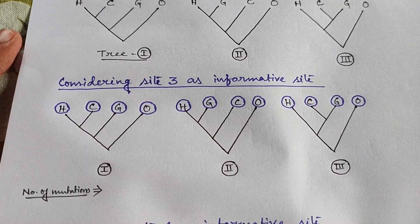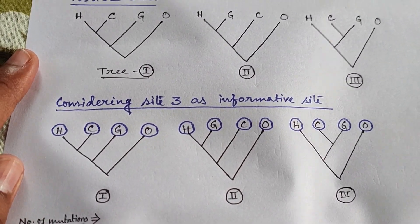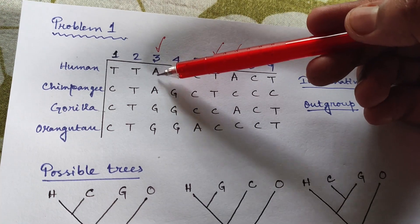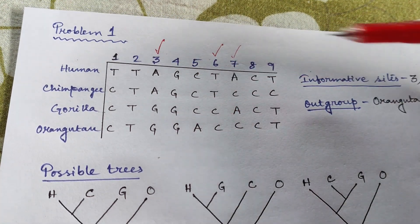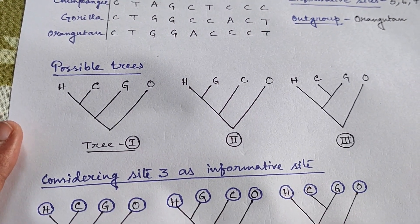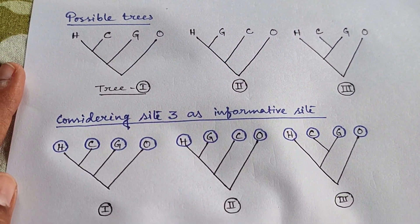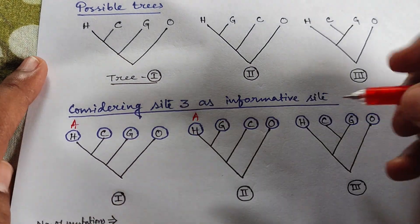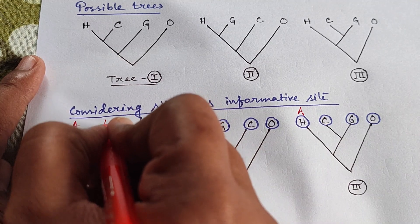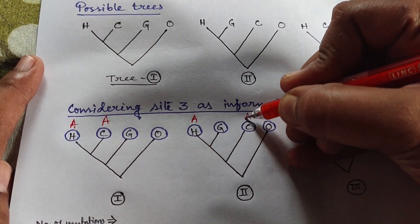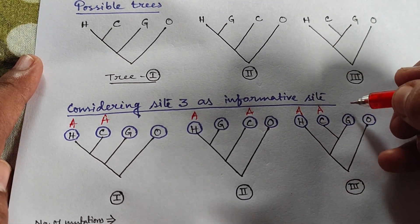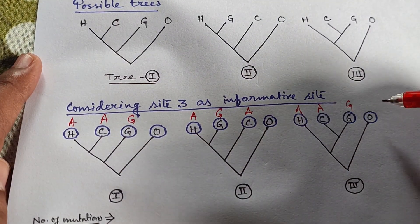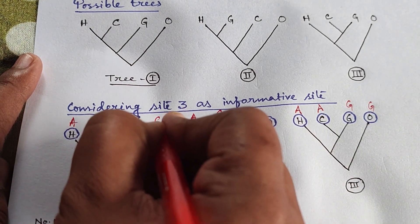Now calculate the number of mutations for each informative site for each tree. For site 3: human has A, chimpanzee has A, gorilla has G, orangutan has G. Write down A wherever human appears, A wherever chimpanzee appears, G wherever gorilla appears, and G wherever orangutan appears across all three trees. Since orangutan is the outgroup, the base of the tree should also be G.